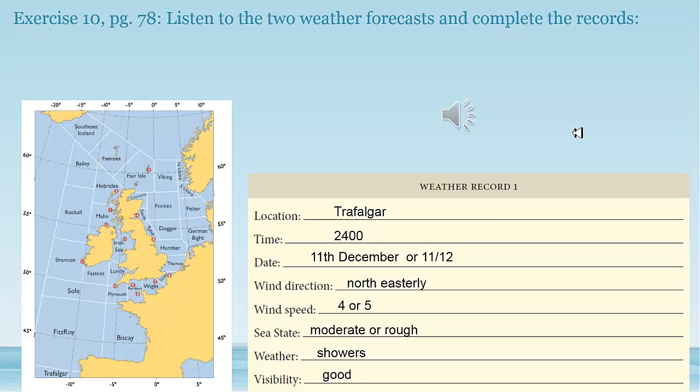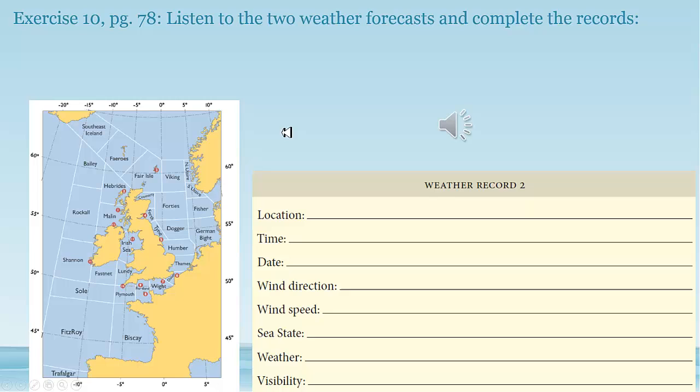I know that was not easy. So let's try doing the next one — weather record 2. Again, we're going to listen three times, and you need to pick out the location, the time, the date, and then the wind direction, wind speed, sea state, the weather, and the visibility. Here we go, first time. Synopsis at 0800 on the 23rd of March, Cromarty. Variable 3 or 4, becoming south, 5 to 7, slight or moderate, occasionally rough, fair, good.